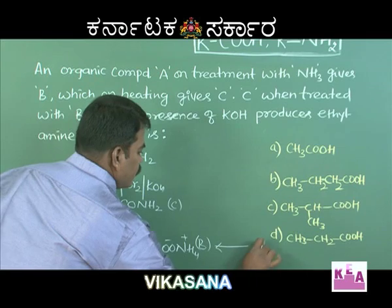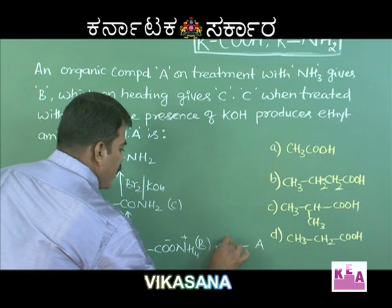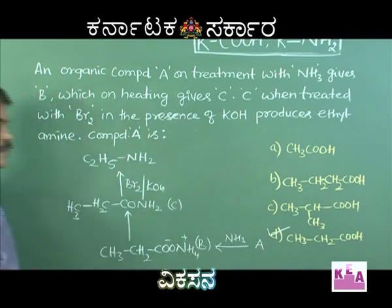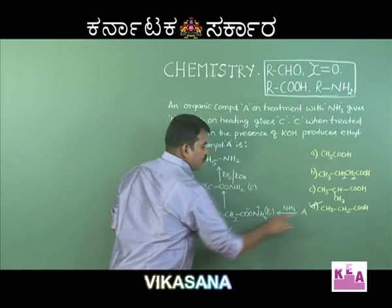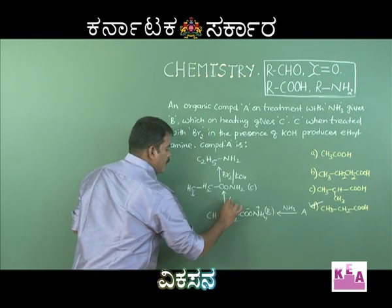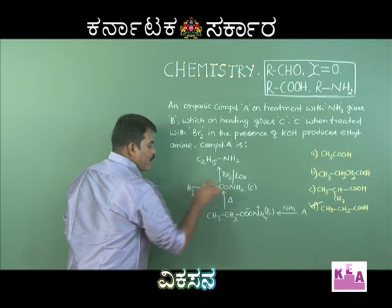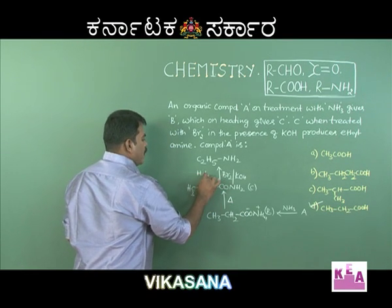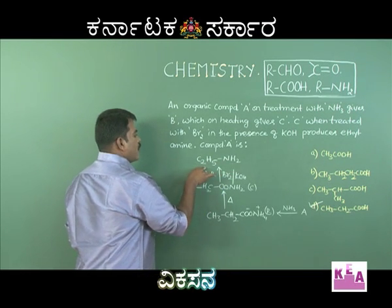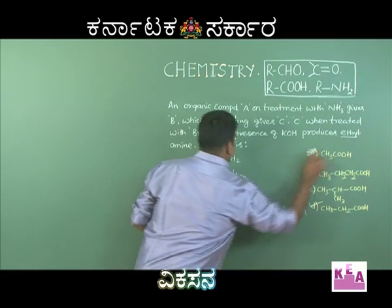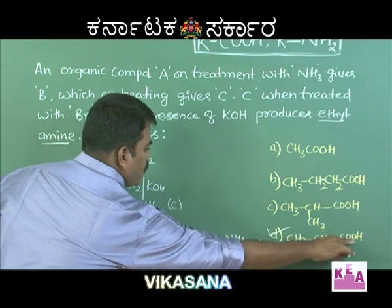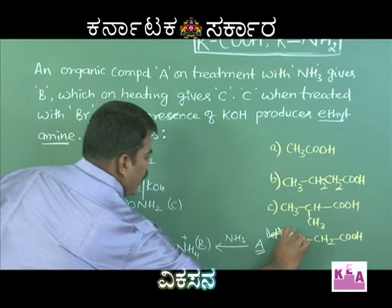Compound B (ammonium propanoate) comes from compound A. Adding ammonia to propanoic acid gives ammonium propanoate, and on heating this undergoes the Hofmann bromamide degradation reaction to eventually give ethylamine (C₂H₅NH₂). Therefore, compound A must be option D: CH₃CH₂COOH (propanoic acid).